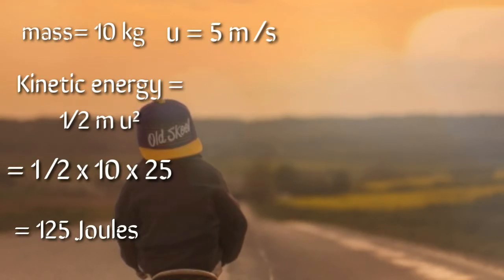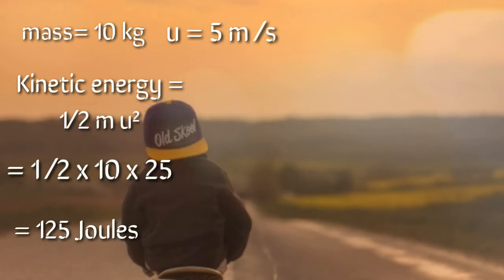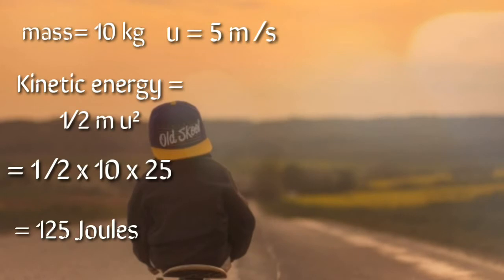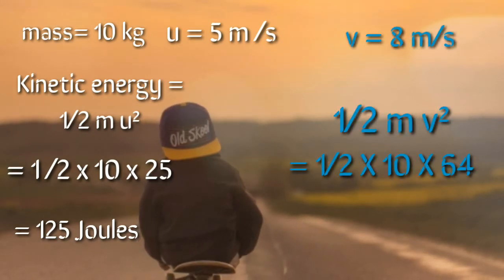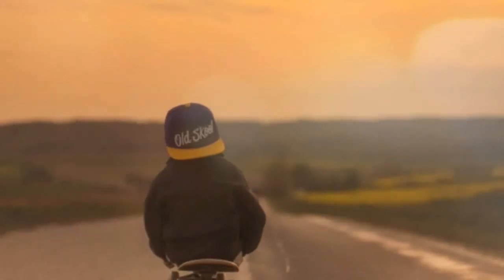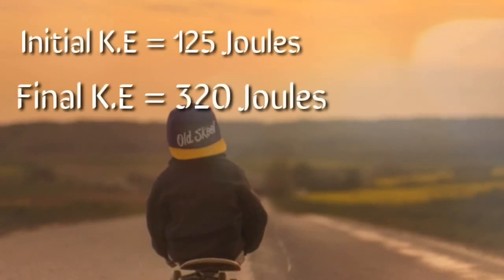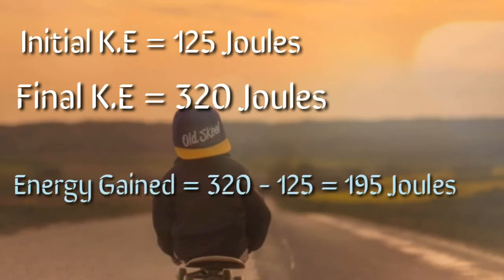Now just suppose that someone gives him another push and his velocity is increased. Now just suppose his velocity is increased from 5 meter per seconds to 8 meters per second. Now calculate his kinetic energy. It will be equal to 320 joules. That means by giving him a push, we have given him an additional energy of 195 joules.